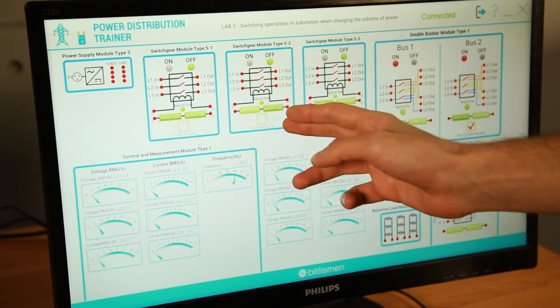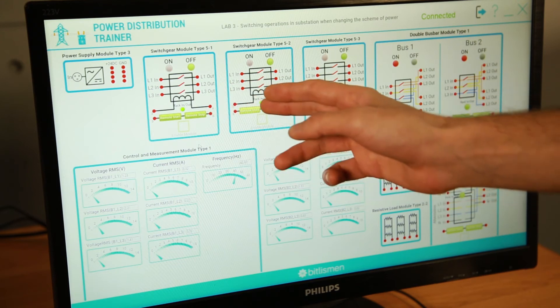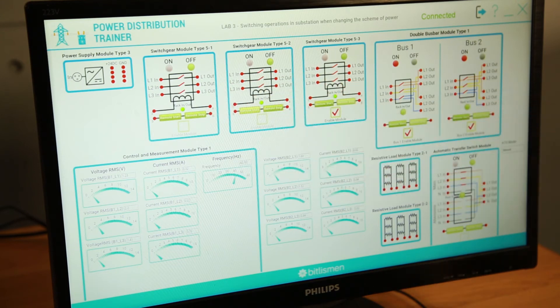Switch gear five one and five two cannot be switched at the same time simultaneously and the system will handle that. For example, when I switch on the five one, the system will not allow me to switch on the five two.